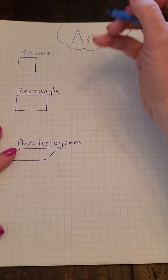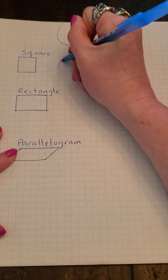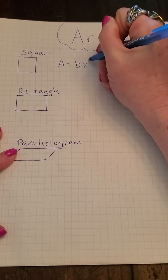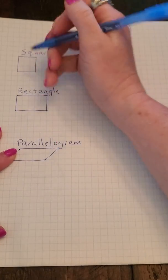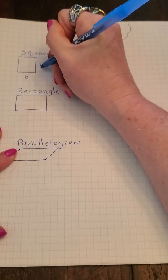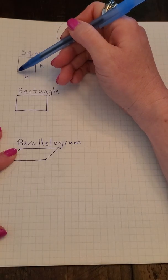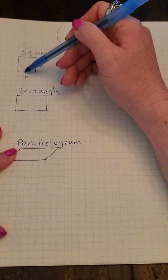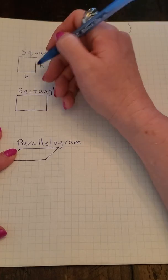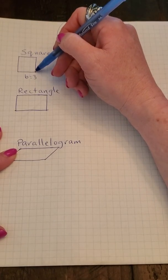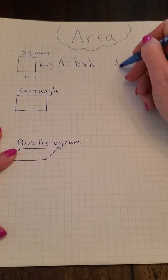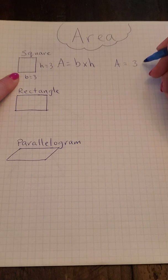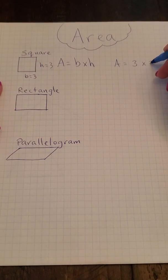To find the area of a square, you use the formula: area equals base times height. The base is the bottom and this is the height. Counting the base: one, two, three. So the base is equal to three and the height is also equal to three because it's a square. So area equals three times three, which means the area of the square equals nine.